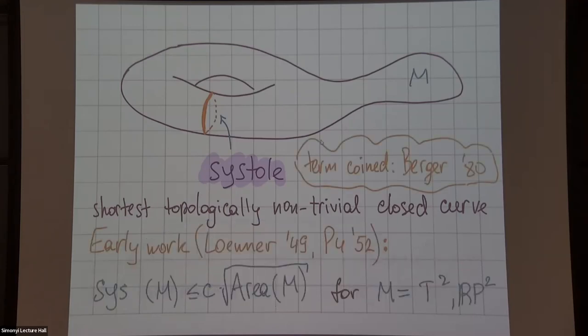The term goes back to Marcel Berger and refers to a Latin word for contraction. It was used in biology before, but it appears in the work of Loewner and his student earlier.